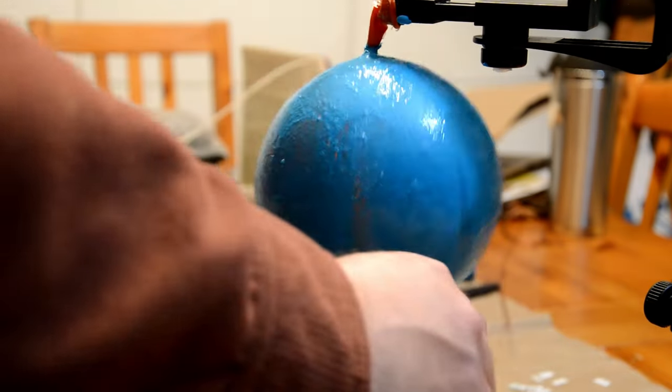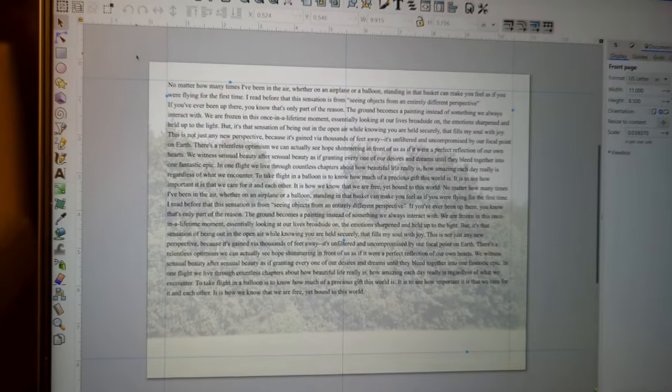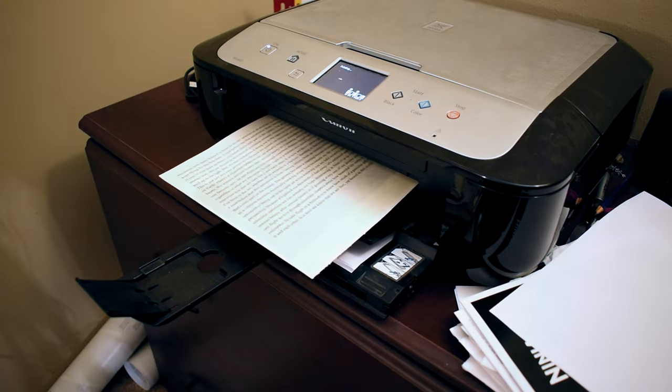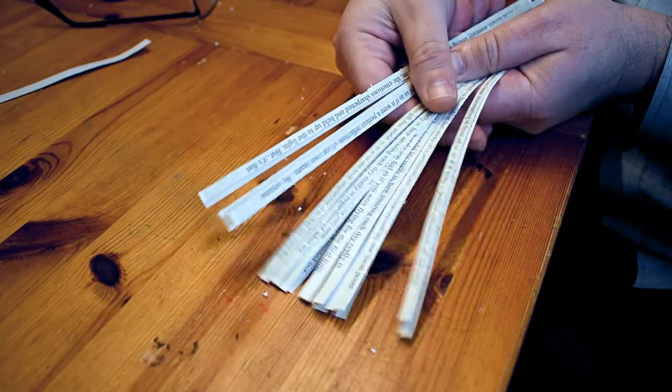While the paint is drying, I'm going to make the word tether. For that, I reformatted the text to be long strings on the page, and then I printed that out and then cut them into long strips.